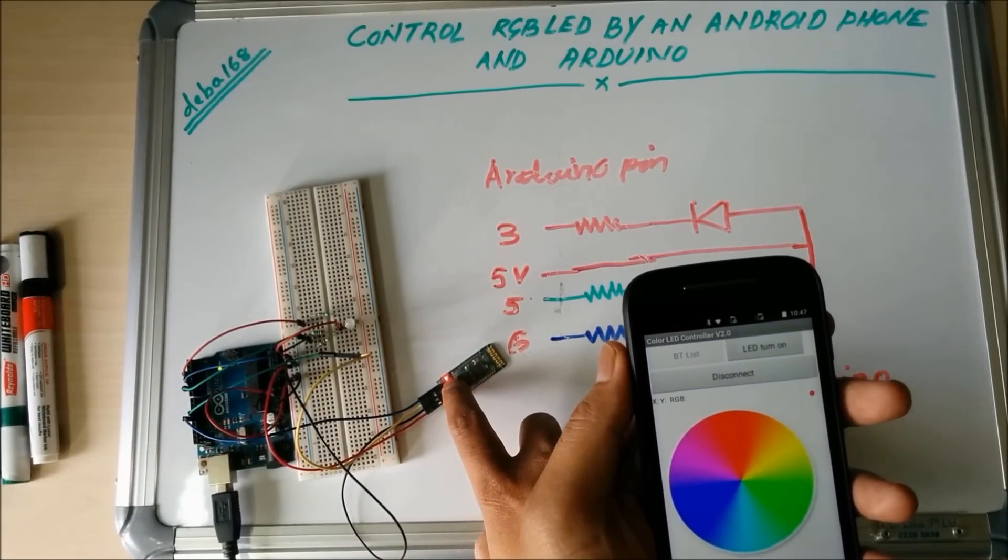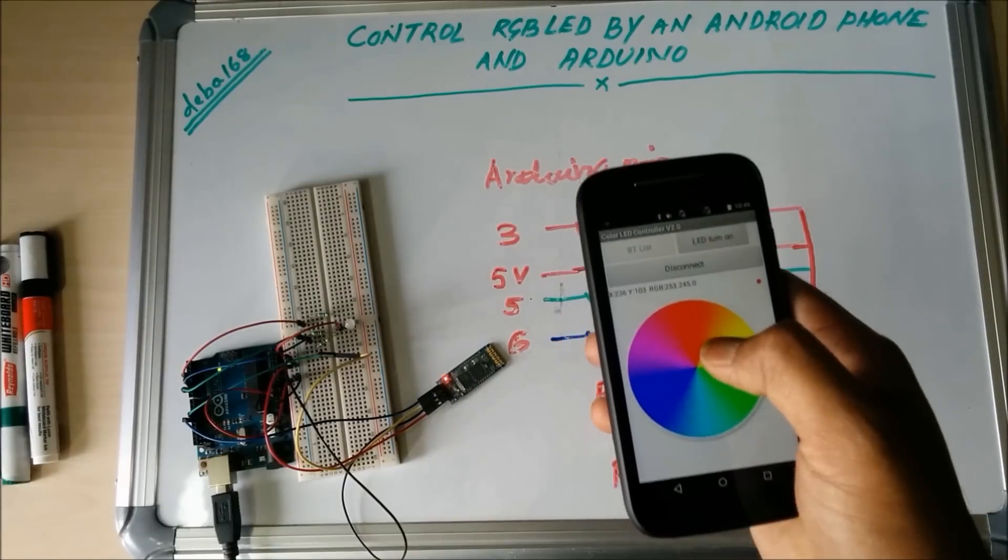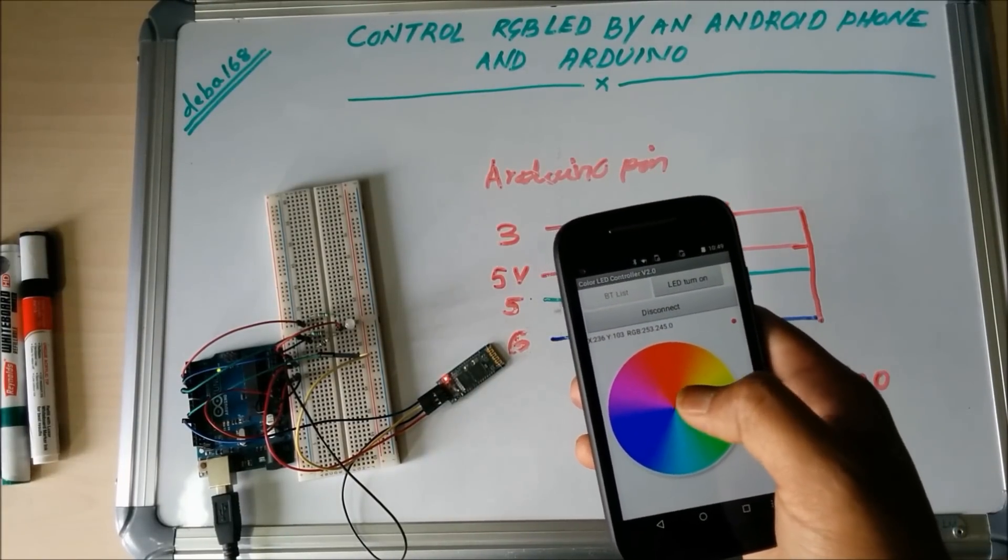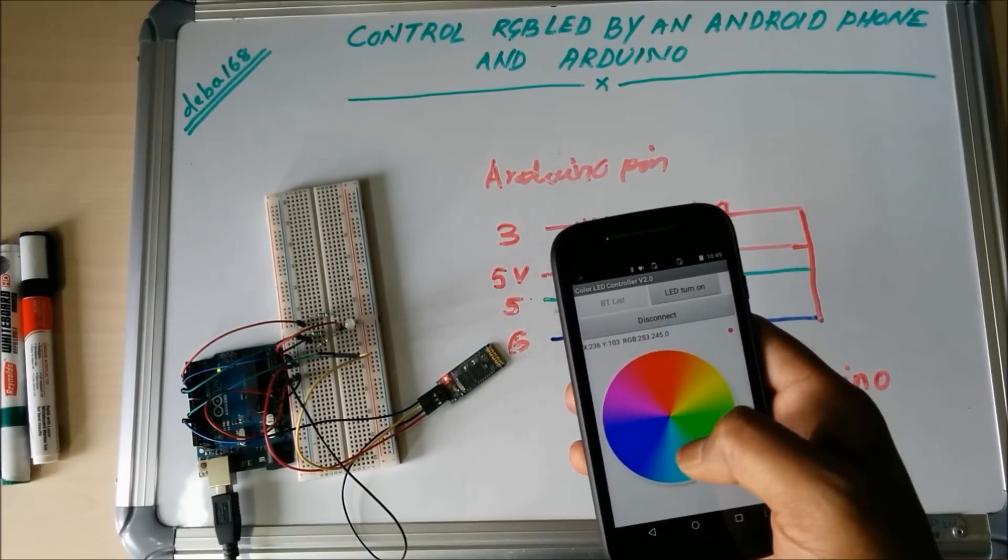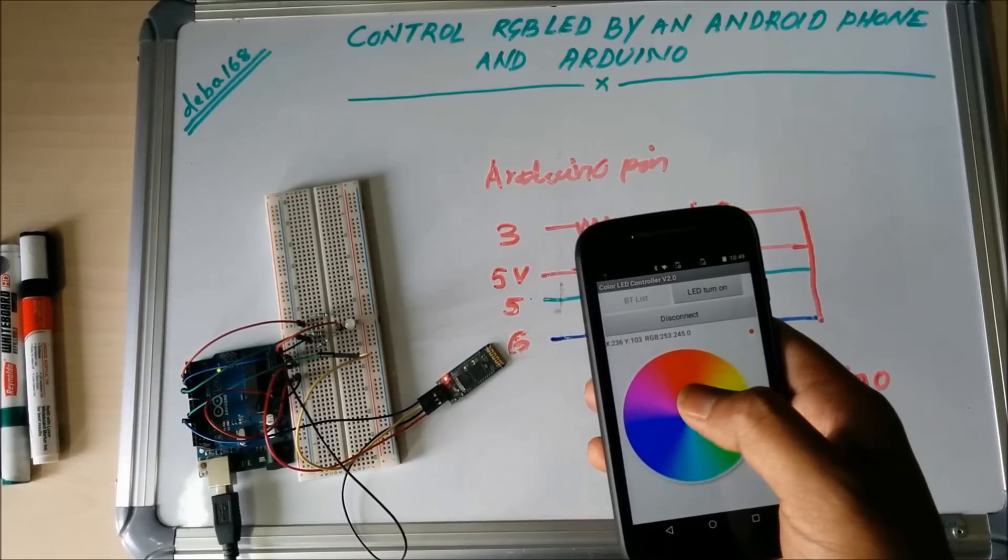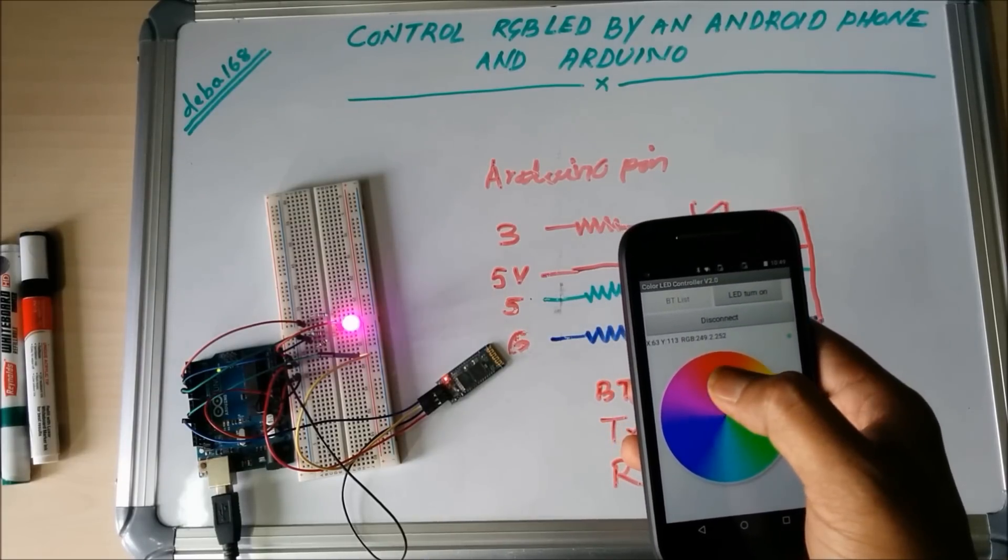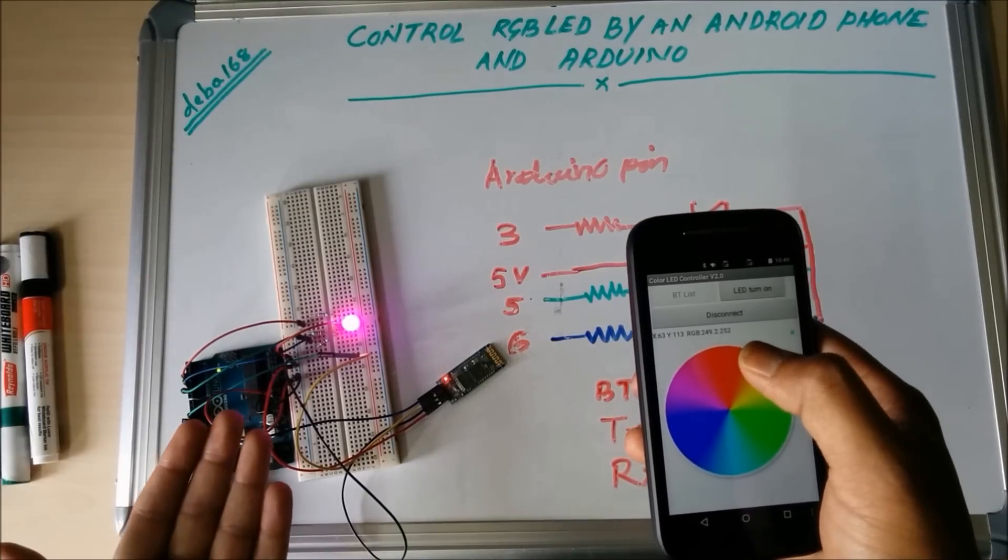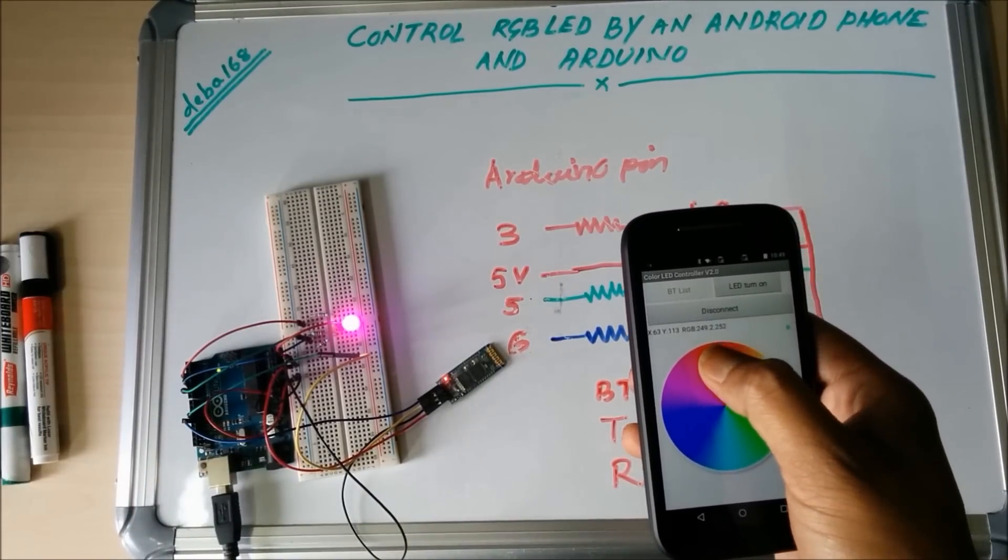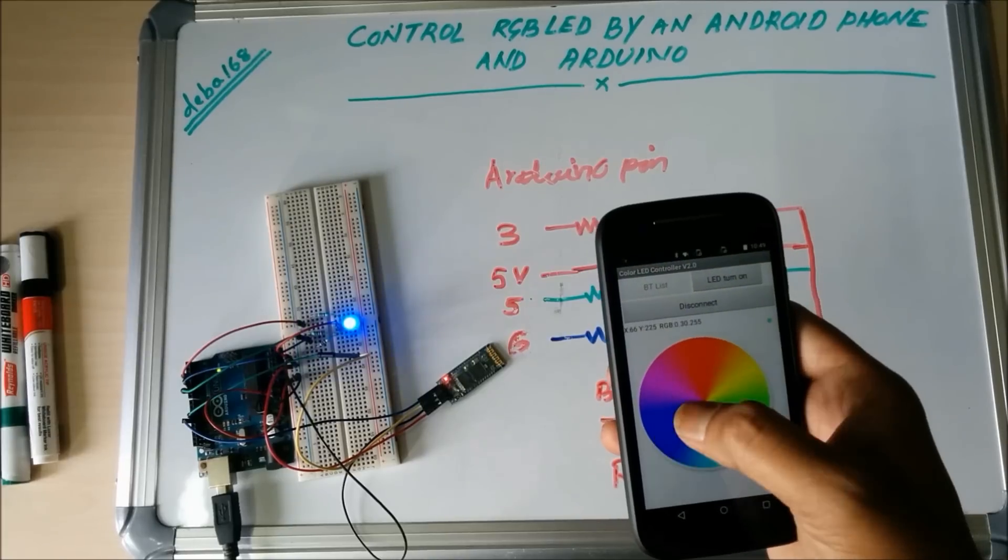Now it is time for testing. Touch the color wheel to see different colors. Suppose I want to see pink color, touch here. Yes, now it is pink. Red, green, blue.